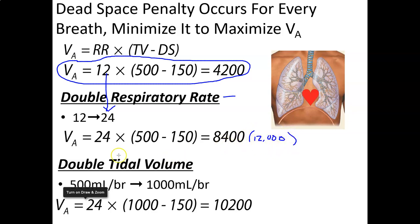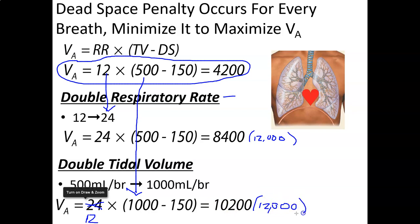Now, when we double tidal volume from 500 to 1,000, keeping respiratory rate at 12 and dead space at 150, we get: VA equals 12 times (1,000 minus 150), which is 12 times 850, which equals 10,200 mL per minute. The VE is still 12,000. So for VE it doesn't matter which you change, but for VA it certainly matters — doubling tidal volume gives significantly more effective ventilation than doubling respiratory rate.